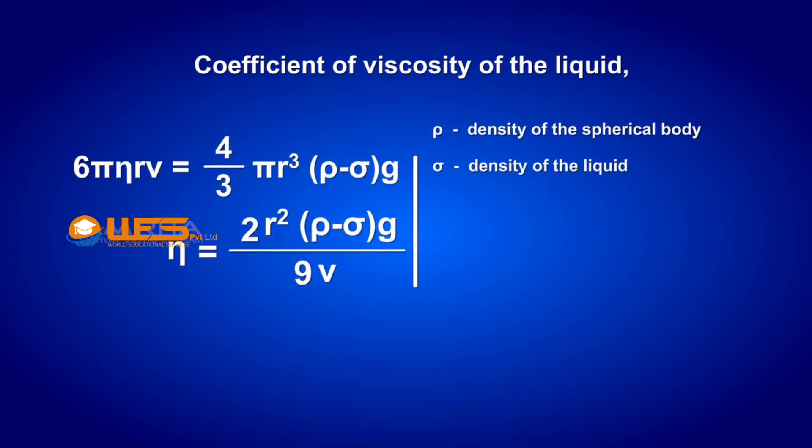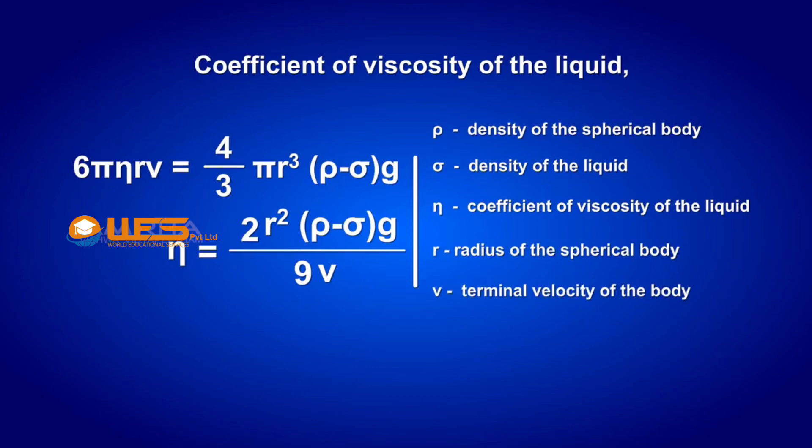σ is the density of the liquid, η is the coefficient of viscosity of the liquid, r is the radius of the spherical body, v is the terminal velocity of the body.